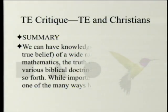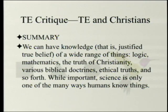Its title is 'How Theistic Evolution Kicks Christianity Out of the Plausibility Structure and Robs Christians of Confidence that the Bible is a Source of Knowledge.' That title pretty much sums up what his conclusion is going to be. The summary starts: we can have knowledge — that is, justified true belief — of a wide range of things: logic, mathematics, the truth of Christianity, various biblical doctrines, ethical truths, and so forth.